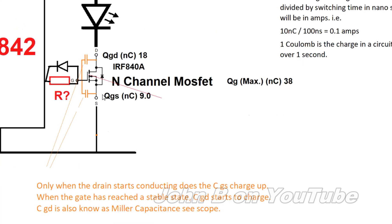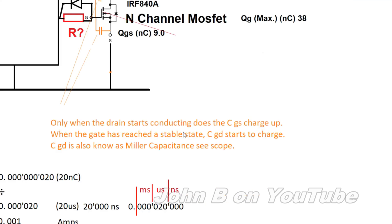These parasitics are not external to the FET, they're internal. Only when the drain starts conducting does the capacitance between the gate and source charge up. When the gate has reached a stable state, the capacitance between the gate and drain starts to charge. The capacitance between the gate and drain is also known as the Miller capacitance, and it behaves in the same manner described for inverting amplifiers. It will all make sense on the scope.